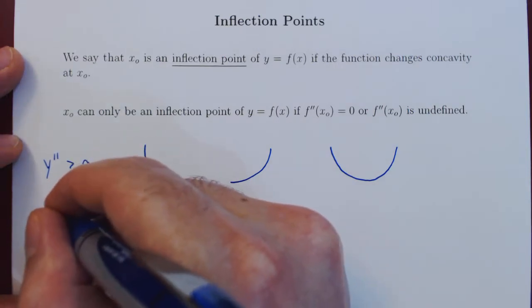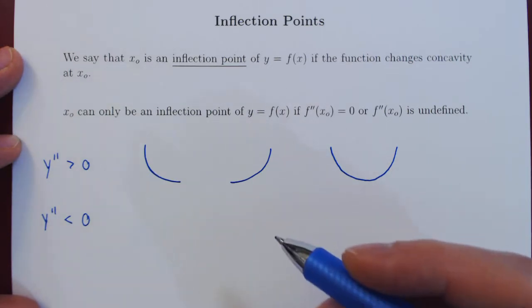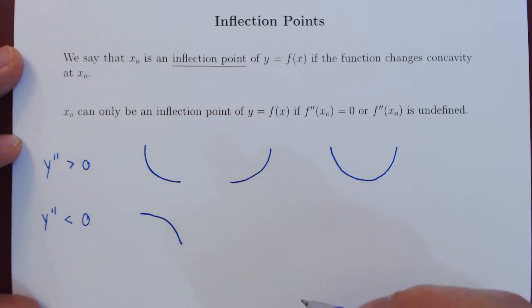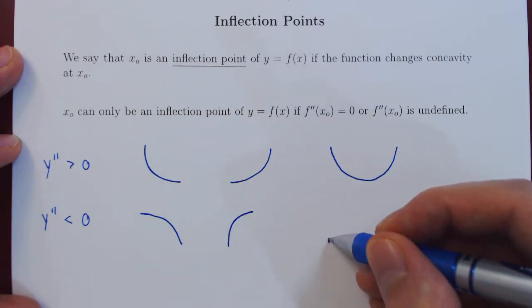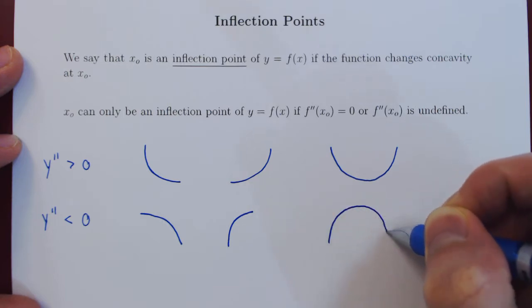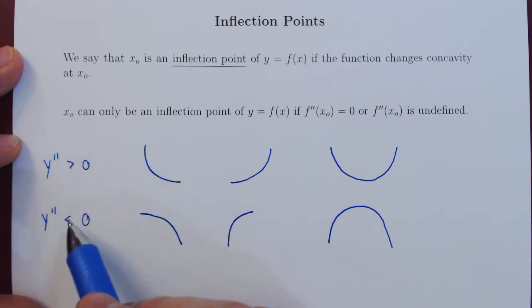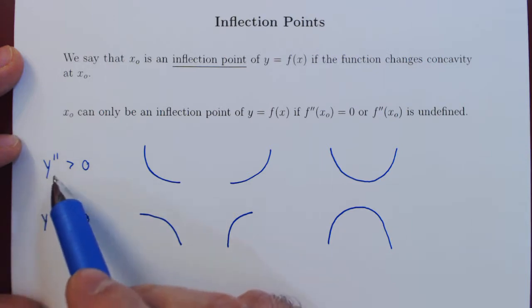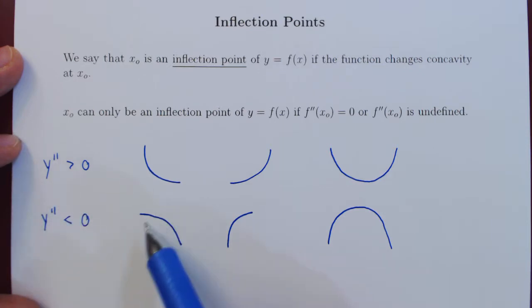The other option is that on some interval, the second derivative is always negative, in which case the curve is always concave down. It could be concave down decreasing, concave down increasing, or concave down first increasing then decreasing. But regardless, when the second derivative is always negative, the graph of the function is always concave down. So when the second derivative is always positive, concavity is always up, and when it is always negative, concavity is always down.